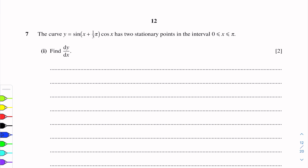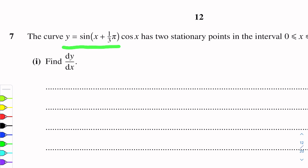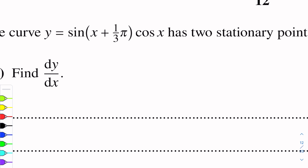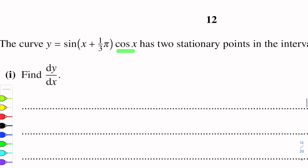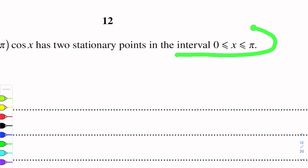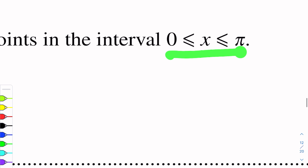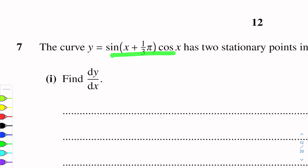Question No. 7 is of differentiation. The curve y is equal to sin(x + π/3) into cos x. These two functions are multiplied — a sin function into a cosine function. This is the equation of the curve. This curve has two stationary points in the interval zero to pi. We have to find dy/dx — the gradient expression.